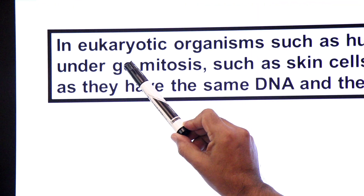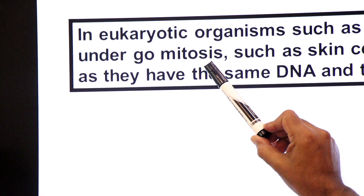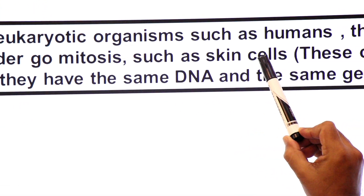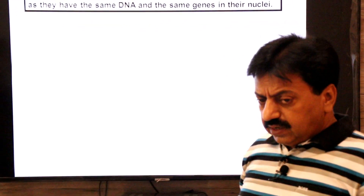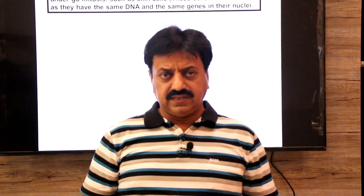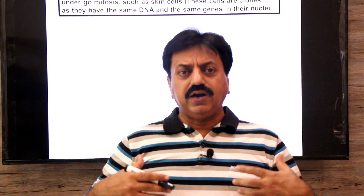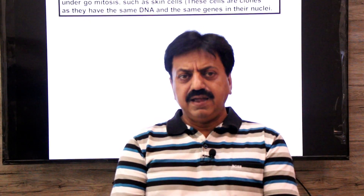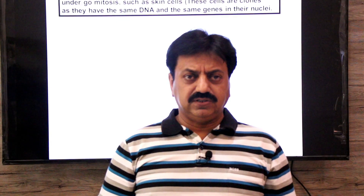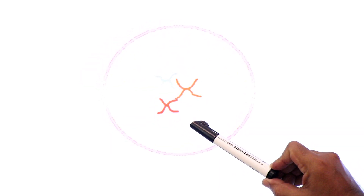In eukaryotic organisms such as humans, the somatic cells — body cells — undergo mitosis, and mitosis is a type of asexual reproduction. For example, skin cells divide by mitosis. These cells are clones because they have the same DNA and the same genes in their nuclei. All the cells produced in our body through mitosis share the same DNA and are clones of each other. Look at the animation of mitosis — when a cell divides by mitosis, the resulting daughter cells are natural clones of each other because they share the same DNA and same genes.